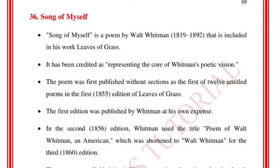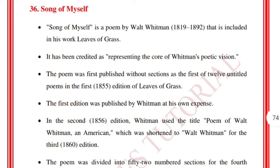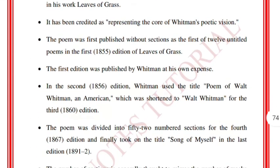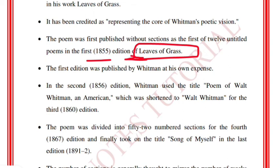Song of Myself is a poem by Walt Whitman included in his work Leaves of Grass. It has been credited as representing the core of Whitman's poetic vision. The poem was first published without sections as the first of twelve untitled poems in the first 1855 edition of Leaves of Grass. The first edition was published by Whitman at his own expense.